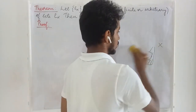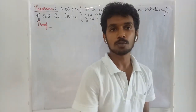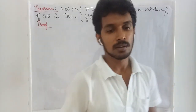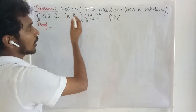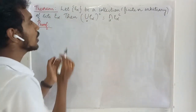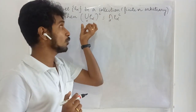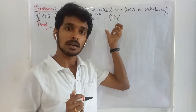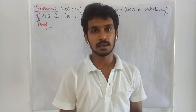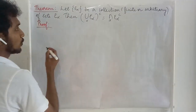Before going to that result, let us prove a preliminary result which is to be used in the upcoming lectures. We are given a collection, finite or arbitrary, of sets E-alpha. After making the union, we are taking the complement. The claim is that this equals taking the complement of each set and then taking the intersection. We might have seen this in basic set theory, but here we are going to prove it in general.